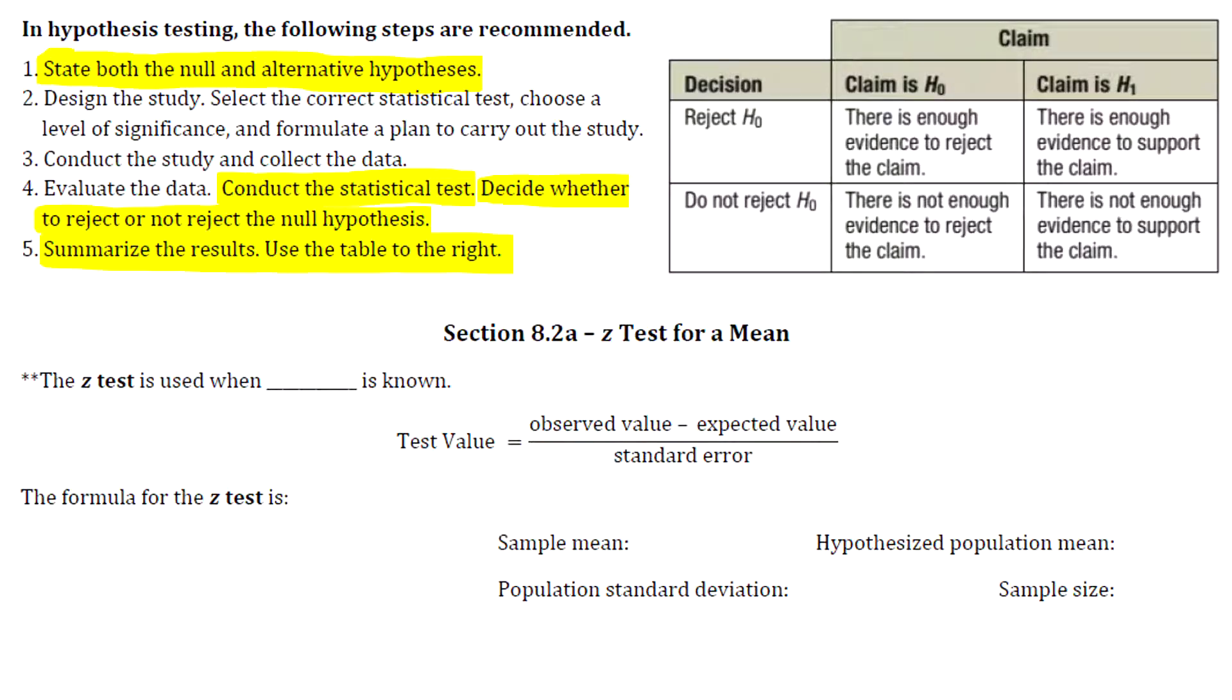You will get very comfortable with this table. You do not have to memorize it. I suggest keeping it handy, right along with your critical values. Let's look at what our possibilities are for our summary statement. There are four possible statements. It depends on whether your claim is located in the null or alternative hypothesis, and what decision you make - whether you reject the null or don't reject the null.